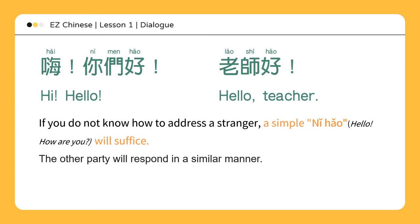In local custom, it is good manners to address someone by their title if it is known to you. If you don't know, follow others' lead — if they say 老师, you say 老师 too. Han people greet others in a variety of ways: nodding, waving, or addressing the other person by name or title if known to you. For example: hello teacher, hello Mr. Chen, or hello Ms. Lin. If you do not know how to address a stranger, a simple 你好 — hello, how are you — will suffice. The other party will respond in a similar manner.